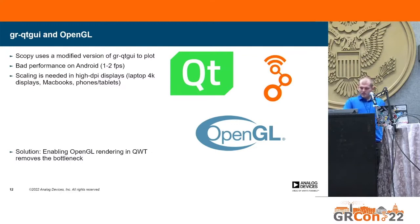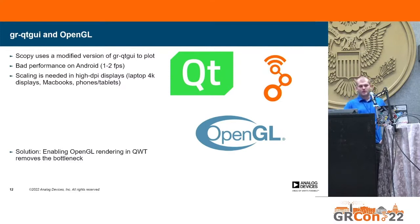The solution was to enable OpenGL rendering in QWT and eventually in GRQT GUI. With this optimization, the bottleneck is removed — we use the GPU to plot, which frees up a lot of CPU cycles for GNU Radio to actually do computations and not plot stuff on the screen.